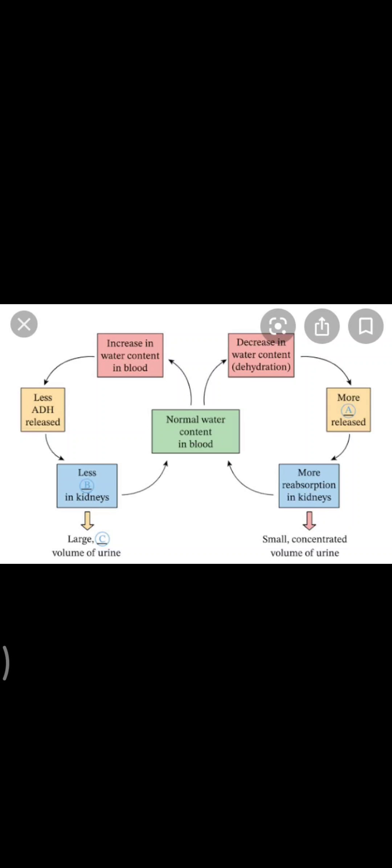When ADH or vasopressin is not released, the renal tubule will not reabsorb any water, and dilute urine with a large amount of water passes out of the body. On the other hand, when blood volume decreases due to less water consumption, the stimulus is sent to osmoreceptors, which activate the pituitary gland to release ADH or vasopressin, causing reabsorption of water by the renal tubule, and concentrated urine with less water is passed out.